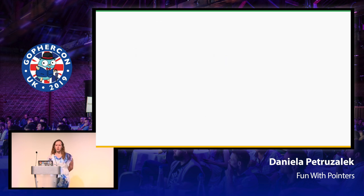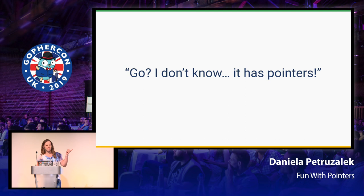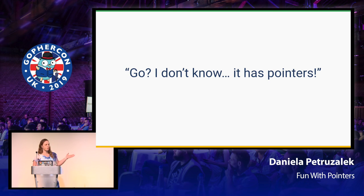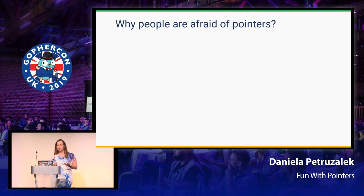The whole idea for this talk started a couple of months ago when I was talking with a co-worker about how Go is such an amazing language with all those features, and he said to me: 'Go? I don't know — it has pointers.' People usually think: 'Oh my God, pointers — that's so 80s or 90s, old school, we moved past that a long time ago. Why do we have pointers nowadays?' That made me think: why are people afraid of pointers? Why do they have this kind of prejudice?